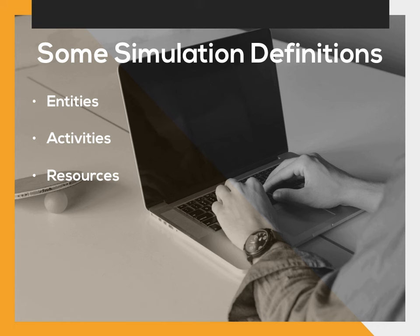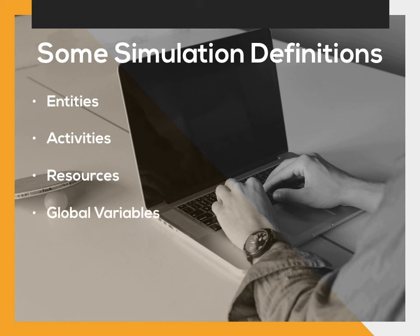Resources are any item in a simulation with a constrained capacity. For example, personnel within your system are resources because they have limited time — a worker on a shift only has a certain amount of time for responsibilities like setting up machines. A conveyor belt is also a resource; you can only put so many parts on it, or it can only move at a certain speed. A global variable is a limitation or constraint that helps configure the system — for example, the maximum number of people that can be in an emergency room at one time.